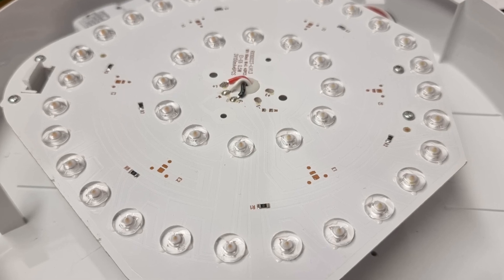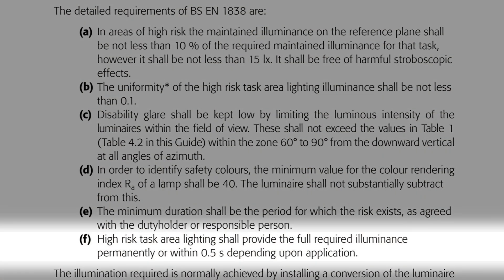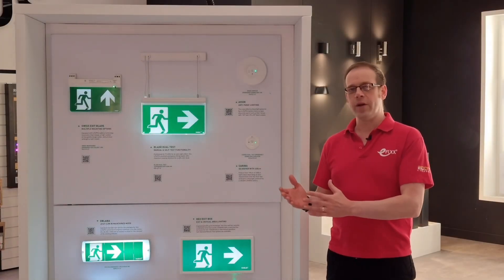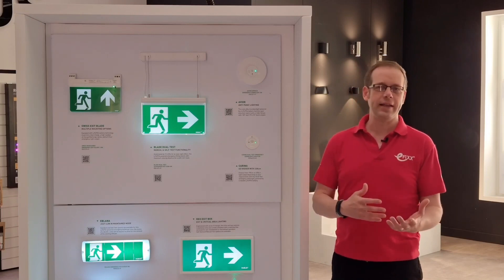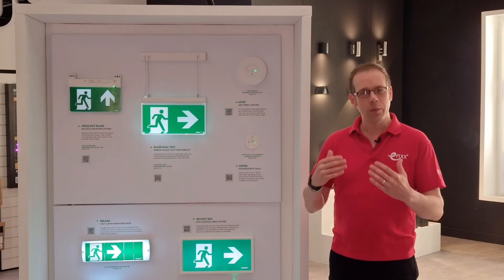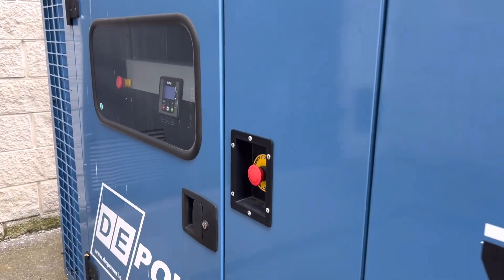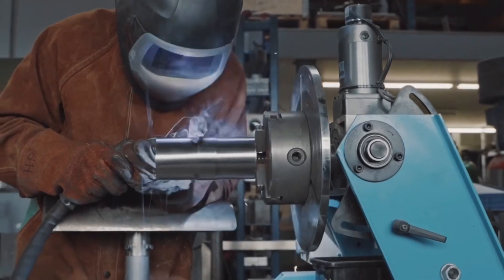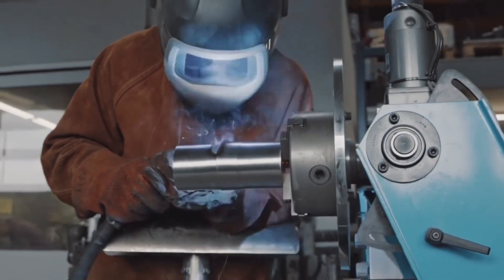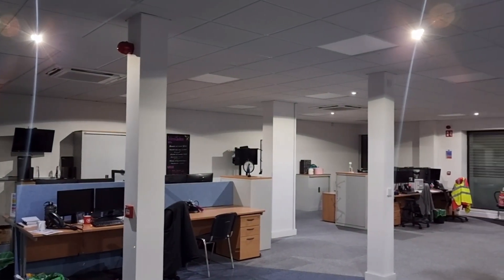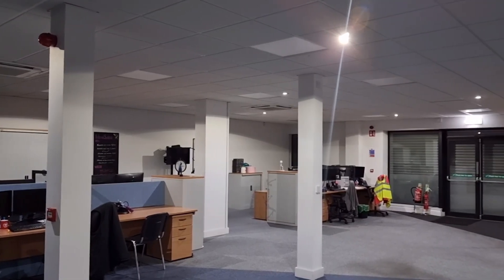Finally, indent F states that high risk task area lighting shall provide the full required illuminance permanently, or within 0.5 seconds depending upon application. This is a throwback to the old days of fluorescent emergency lighting, where non-maintained fittings could take time to warm up and achieve full brightness, or generator-backed lighting could take even longer. In a high risk task area, lights being off even for a few seconds could be disastrous. With the transition to LEDs, achieving very short transition periods has become straightforward even on standard fittings.